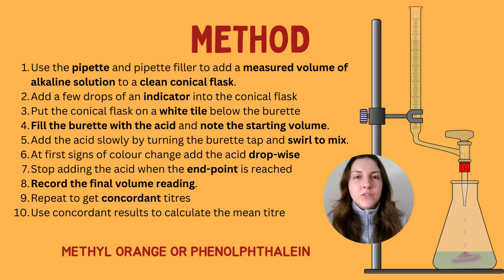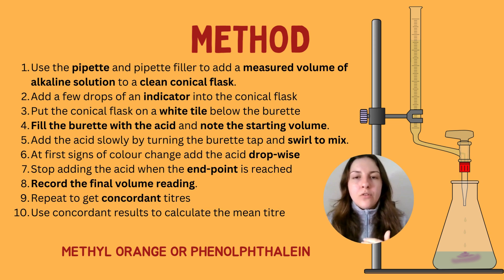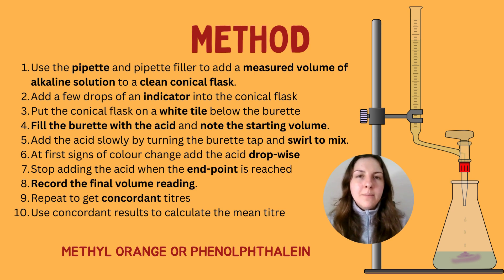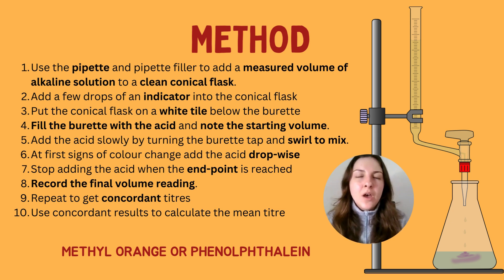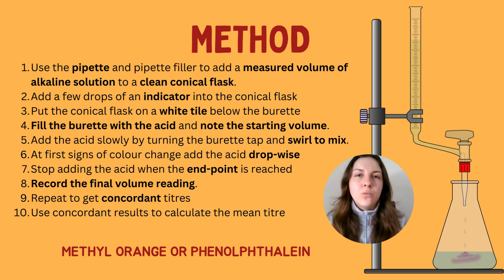Once the burette is filled with acid and you've noted the starting volume — which doesn't have to be at the zero mark — you'll record both the beginning and end volumes to work out the difference: the volume of acid needed for neutralisation. Add the acid slowly by opening the tap of the burette and swirling the conical flask on the white tile. At the first signs of a colour change, close the tap immediately and start adding the acid drop by drop. This can be tedious, but it gives the most accurate and precise results.